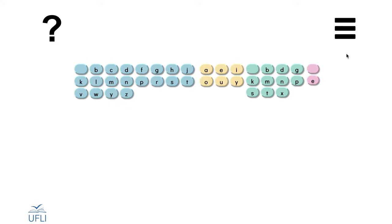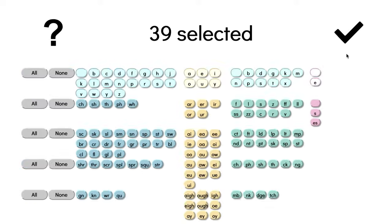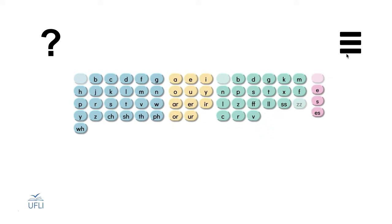If you would like to change the selections of letters or letter combinations, you would select the lines at the top right corner of the page, click on that, and it will take you to a screen where you can choose other letters or letter combinations to use in each position. Once you have the letters you want selected, you click the check mark and it will show you a new screen with whatever letters you selected.